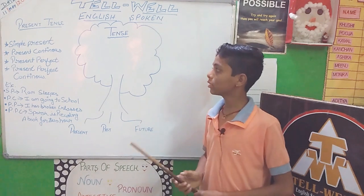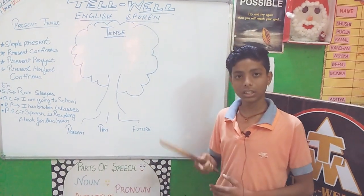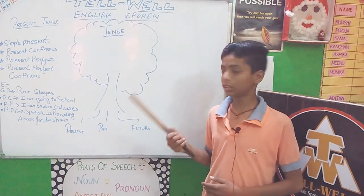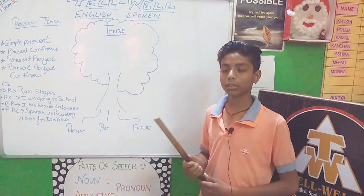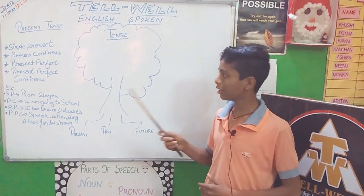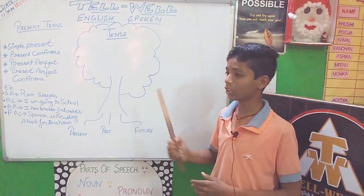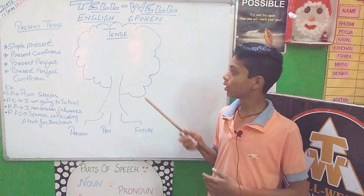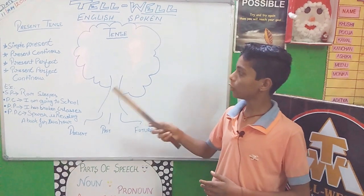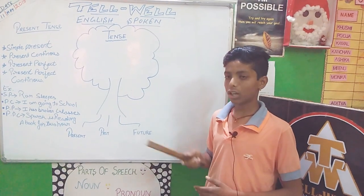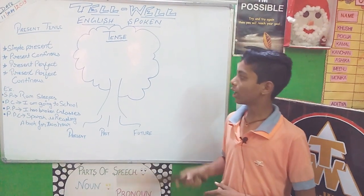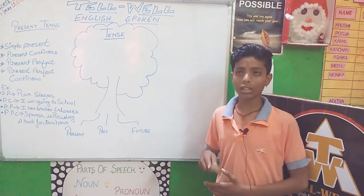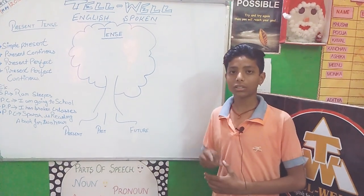The identity of Simple Present is a base form. The identity of Present Continuous is 'Raha hai.' The identity of Present Perfect is 'Chuka hai' or 'Chuki hai.' The identity of Present Perfect Continuous is 'Raha hai' with a time expression.